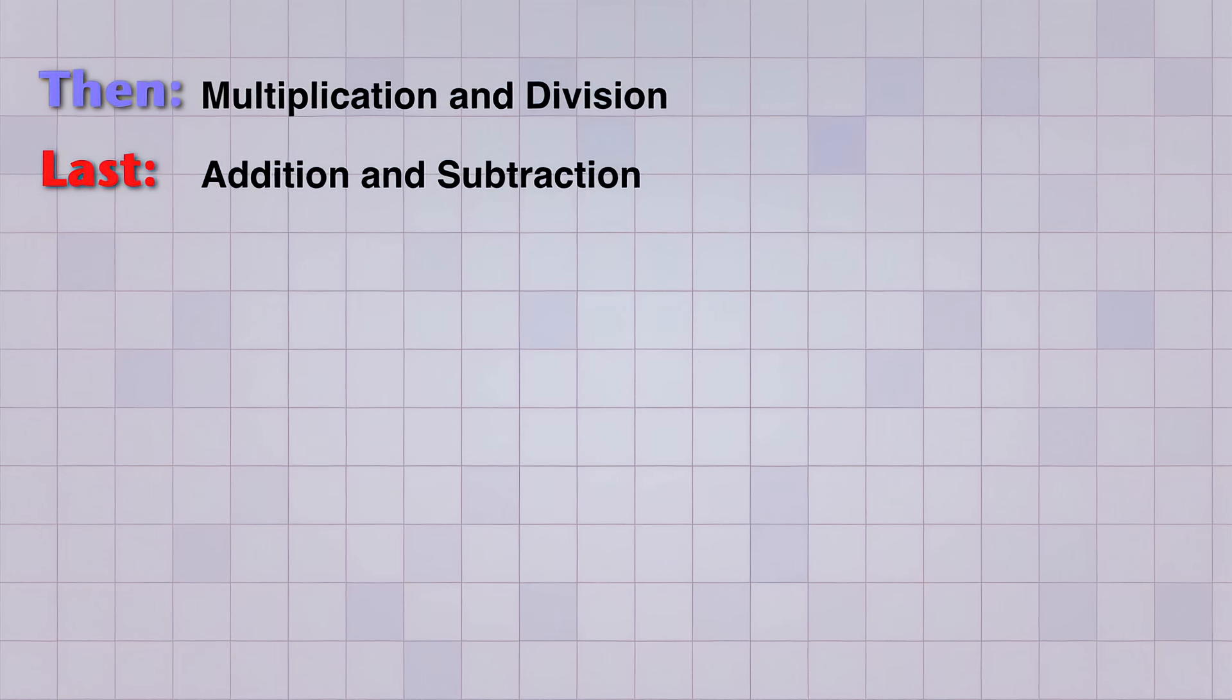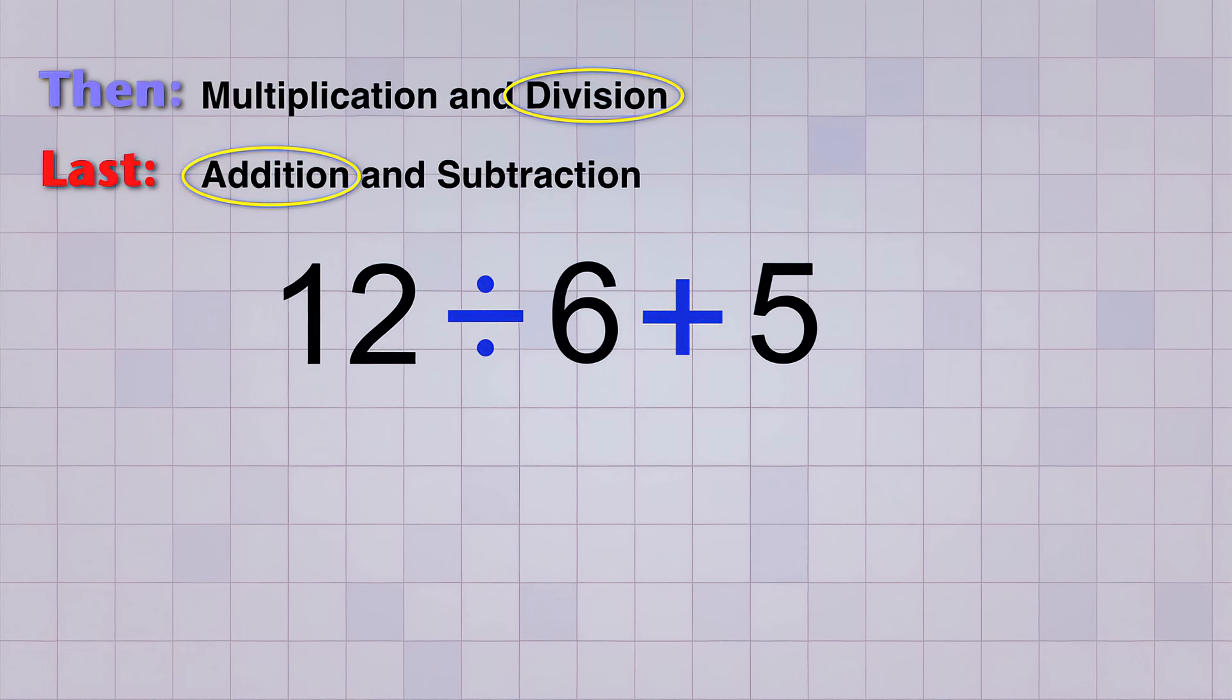And here's another problem. 12 divided by 6 plus 5. Again, our rules say to do the division before addition. So 12 divided by 6 equals 2, and then we add the 5 to get 7.